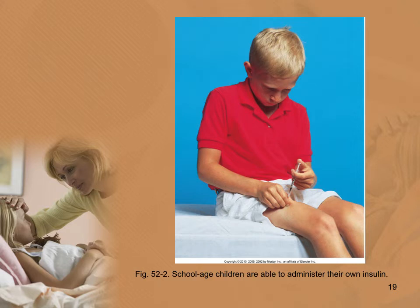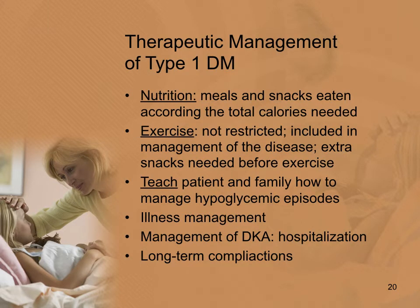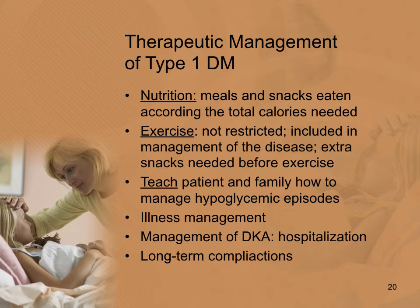School-age children can give their own injections and check their own blood sugar. Management of type 1 diabetes includes correct nutrition — meals and snacks based on total calories needed for that age and size. Exercise is encouraged, but children need to know how to manage their diabetes around exercise, including snacks beforehand. Teaching focuses on recognizing hypoglycemia signs and symptoms and managing those episodes, as well as illness management — continuing to check sugar and take insulin even when not eating normally.